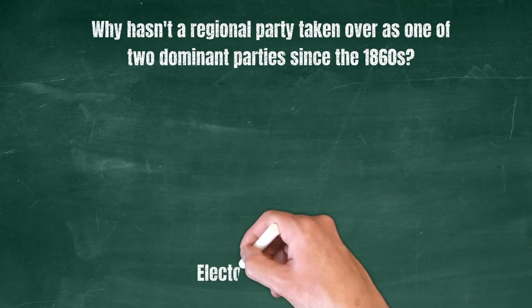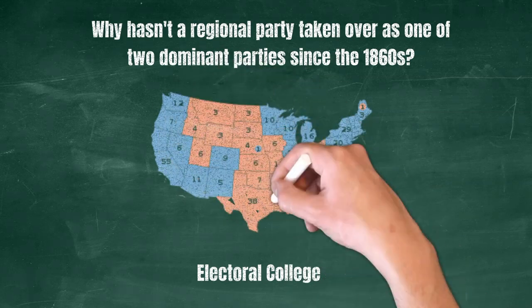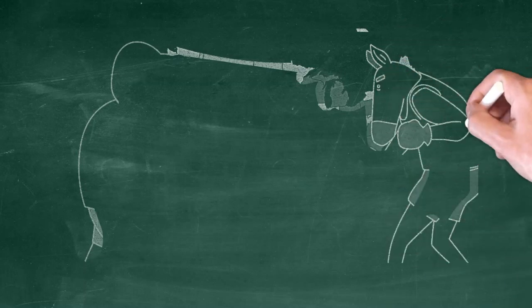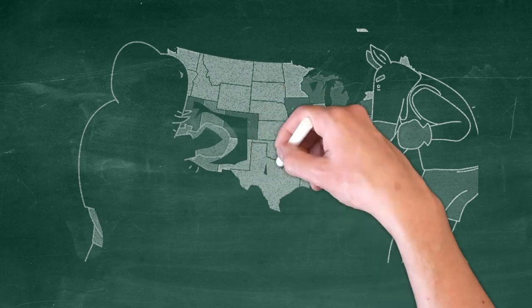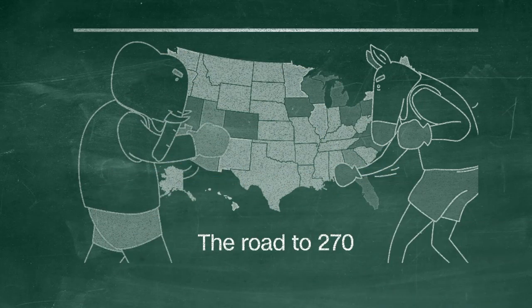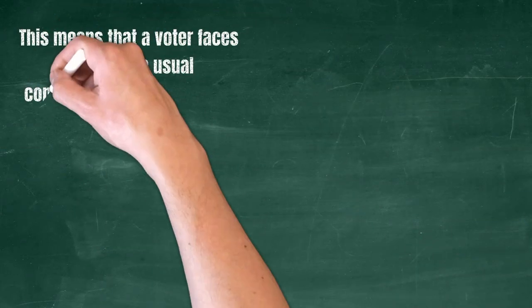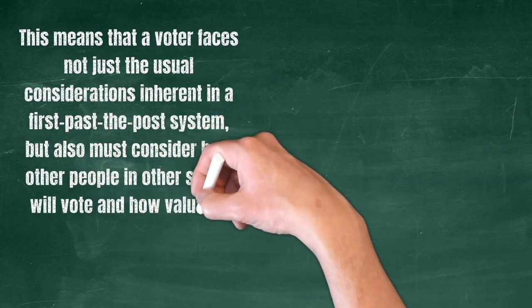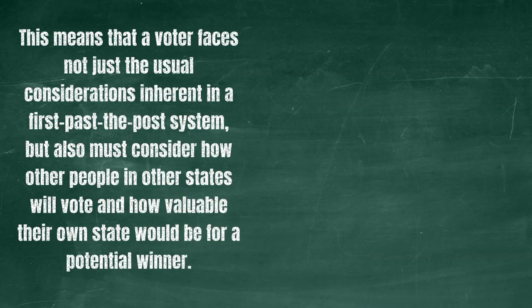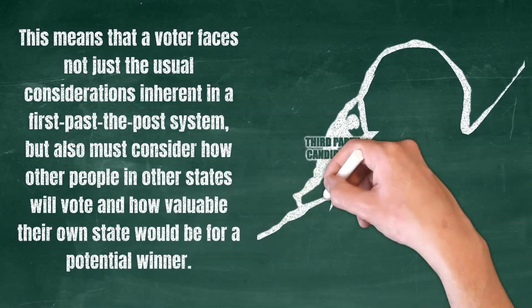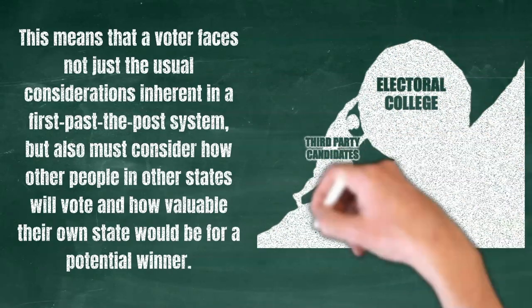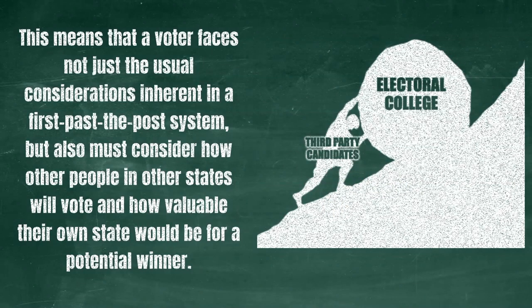The short answer is the Electoral College. In order for a candidate to win the presidency, that person must have one more vote than anyone else in enough states, because even though we pretend otherwise, our presidential election is actually 50 different elections happening at the same time. This means that our voter faces not just the usual considerations inherent in a first-past-the-post system, but also must consider how other people in other states will vote, and how valuable their own state would be for a potential winner. This dual constraint makes it basically impossible for any third party to ever win the presidency, because enough voters have to believe that other voters in a sufficient number of states will also vote for their favorite candidate.